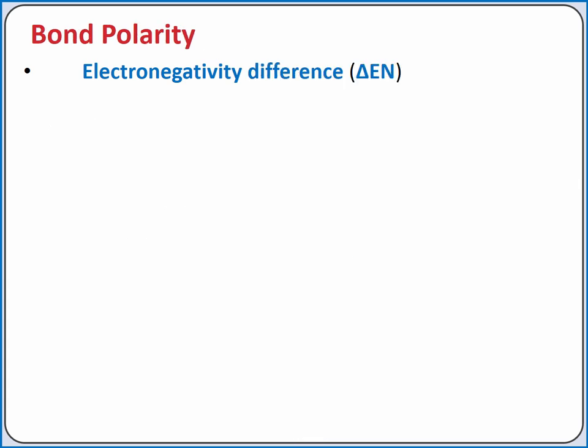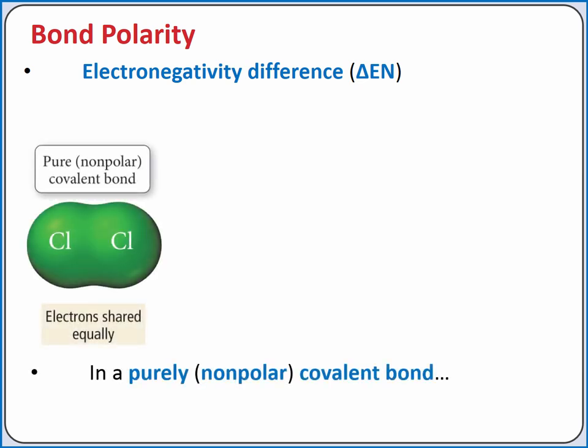The difference in electronegativity between two atoms of a bond determines the type of bond. If there is no electronegativity difference between two atoms, the electrons are shared equally, and the bond is called purely covalent or nonpolar covalent.